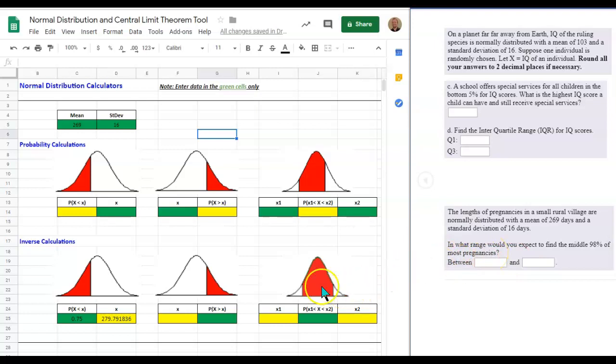In what range would you expect to find the middle 90% of most pregnancies? That middle represents the third chart. And notice, again, we're starting out with a probability here, a probability of 90%, and we're trying to find the values. So again, we're going the inverse direction. Probability goes from a value to a probability. But we're going from a probability to values. So we're going the inverse direction. So we're using inverse calculations.